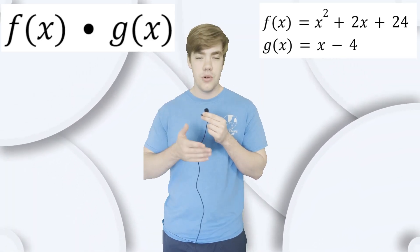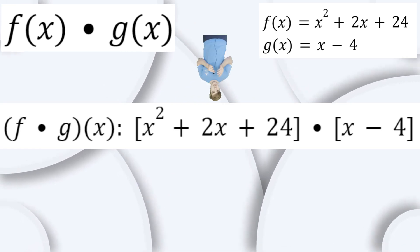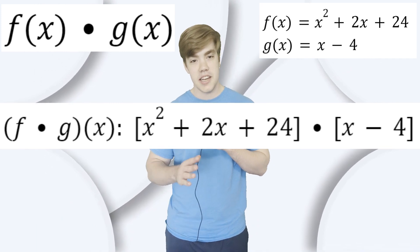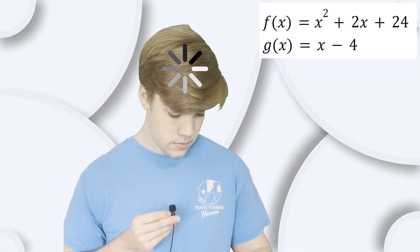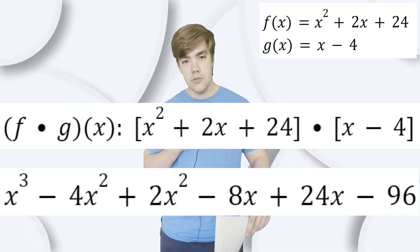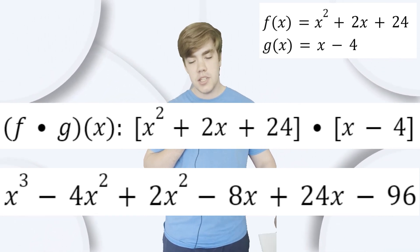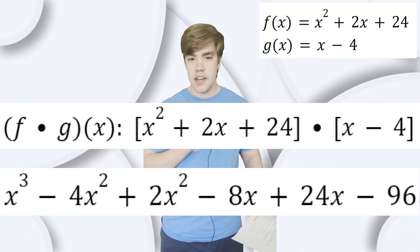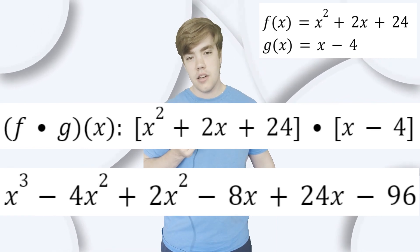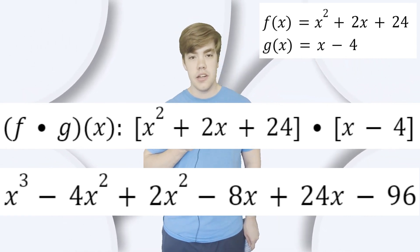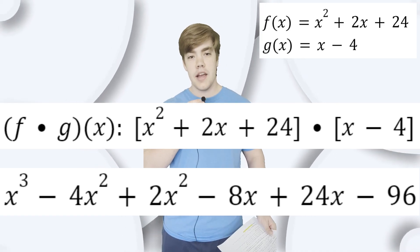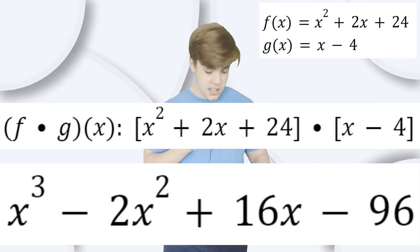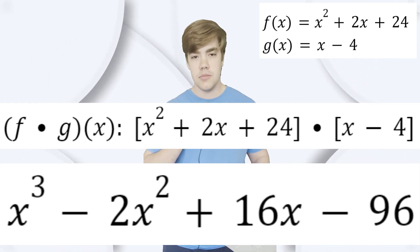Now for the fun part. We can multiply and divide these as well. Let's do f times g of x. x squared plus 2x plus 24 times x minus 4. Yes, we're going to have to do a bunch of distribution. This will take a second. x squared times x will be x cubed. 2x times x will be 2x squared. 24 times x is just 24x. Now to distribute with the negative 4, x squared times negative 4 is just negative 4x squared. 2x times negative 4 is negative 8x. And 24 times negative 4 is negative 96. We can combine a bunch of like terms to get the final answer of x cubed minus 2x squared plus 16x minus 96. And that is equal to f times g of x.